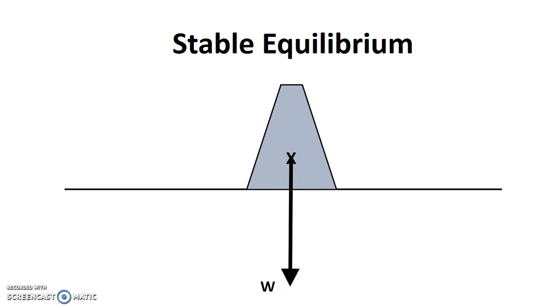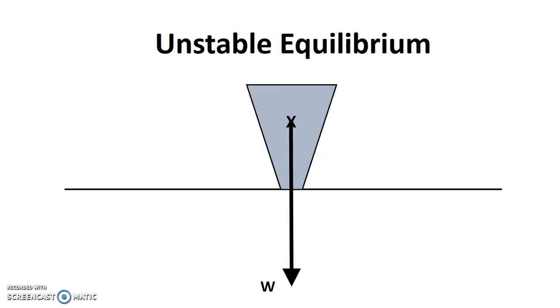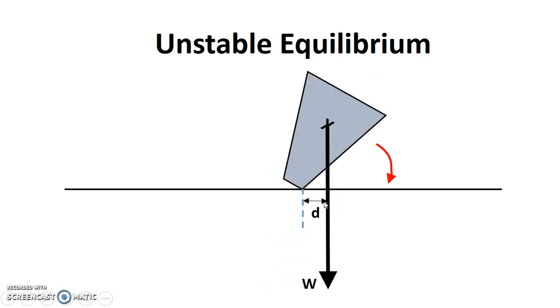What's the other type? You're right, let's look at unstable equilibrium next. Unstable equilibrium over here. You can see, just basically an inverted cone here. Same thing with the center of gravity and the weight going through it.